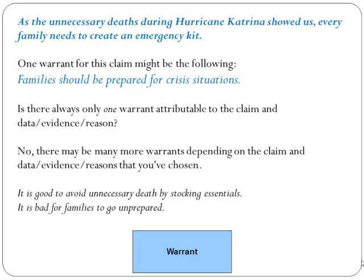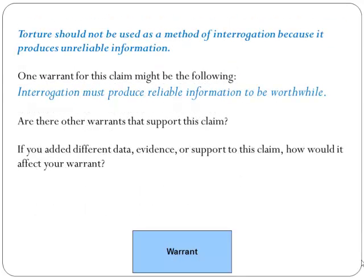Is there only one warrant attributable to a claim or data? There may be many more warrants depending on the claim. Some possibilities are: 'It is good to avoid unnecessary death by stocking essentials,' or 'It is bad for families to go unprepared.' For the third example, 'Torture should not be used as a method of interrogation because it produces unreliable information,' one warrant might be: 'Interrogation must produce reliable information to be worthwhile.' Are there other warrants that support this claim? If you added different data or evidence to this claim, how would it affect your warrant?